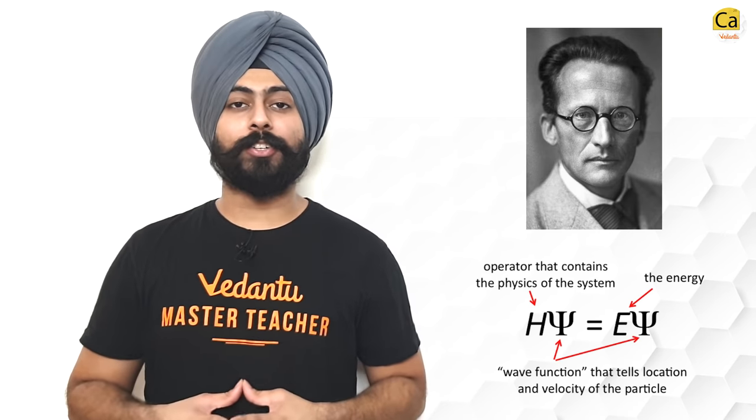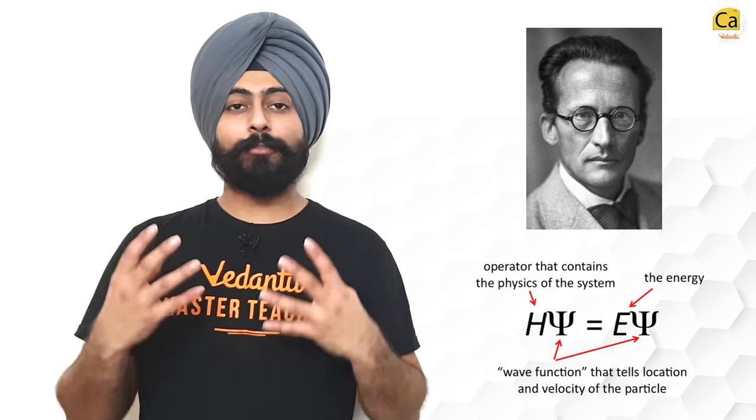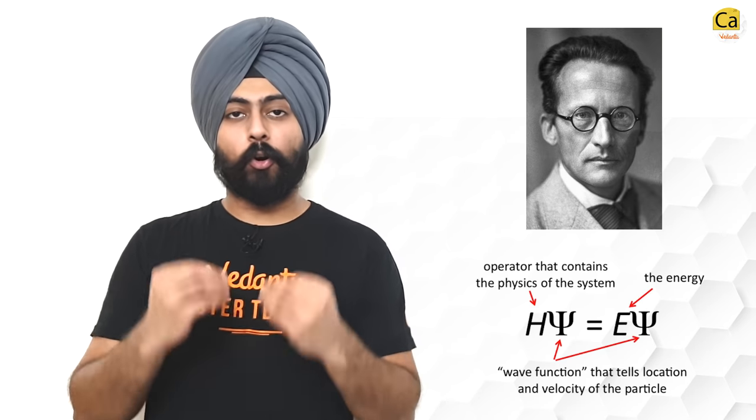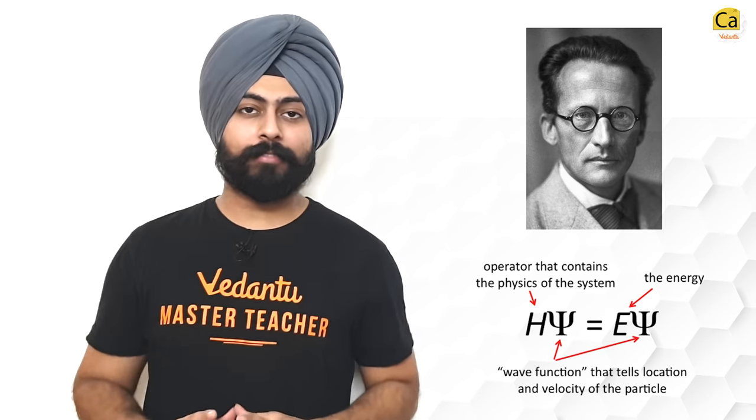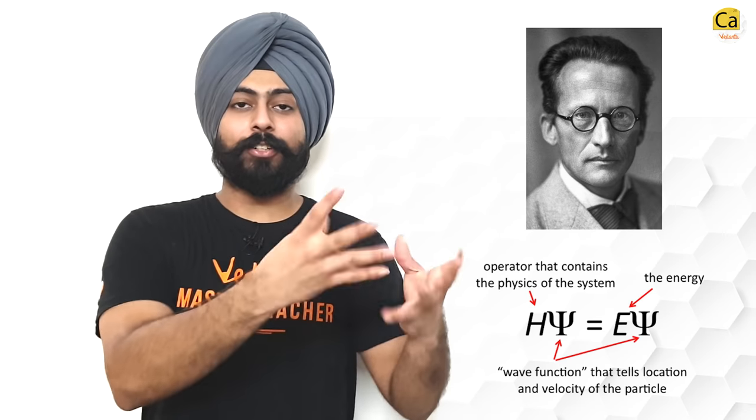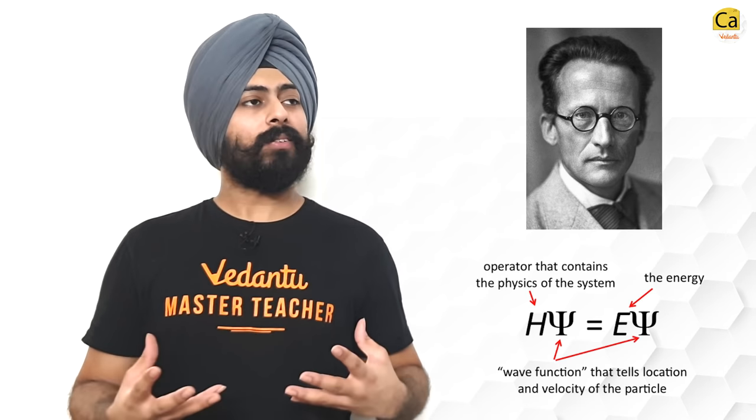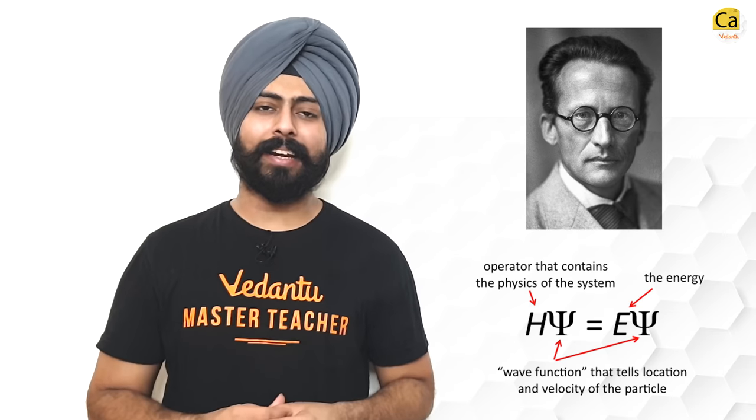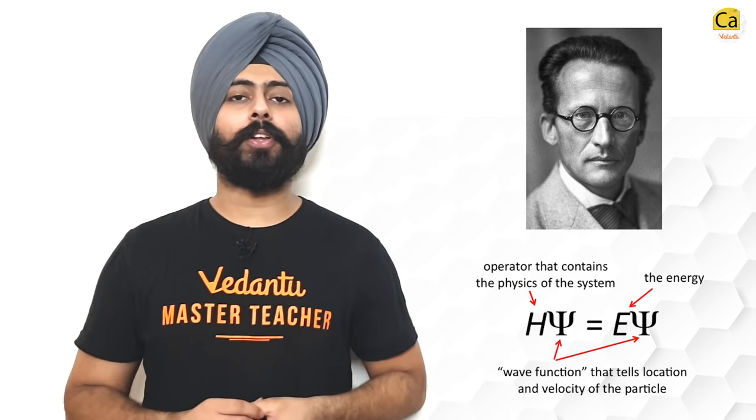Then came the Schrödinger's wave equation. Ĥψ = Eψ. If we put the Hamiltonian operator onto an electronic wave function, it would give us the energy of the system. Now this equation being very complicated, we'd rather just remember the results of it for now. This equation gave us something called orbitals. Orbitals are regions, volume spaces in which the electron has the most probability of being found. You can say that orbitals are basically the houses of these electrons.